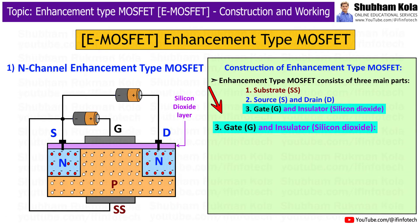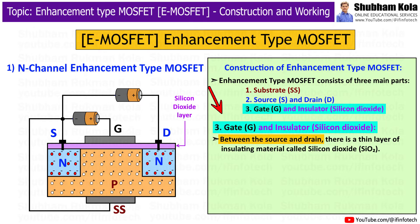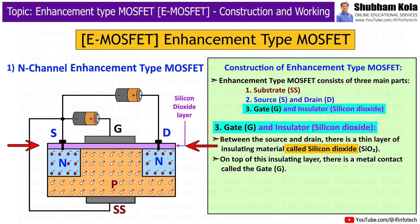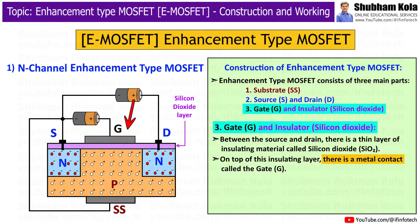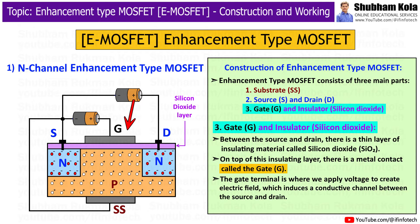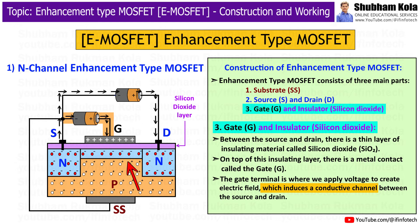Next is the Gate and Insulator. Between the source and drain, there is a thin layer of insulating material, typically silicon dioxide. On top of this insulating layer, there is a metal contact called the gate. The gate terminal is where we apply a voltage to create an electric field, which induces a conductive channel between the source and drain.